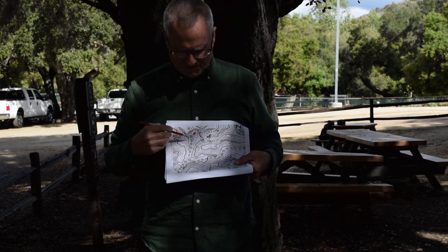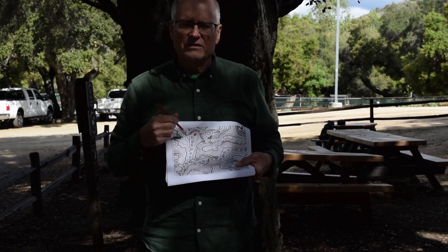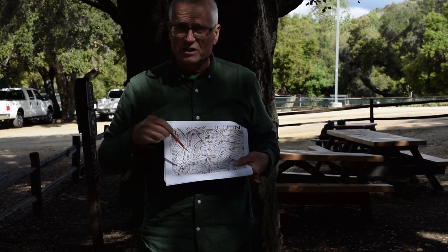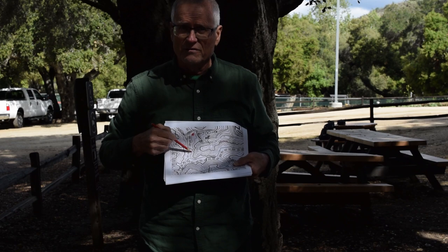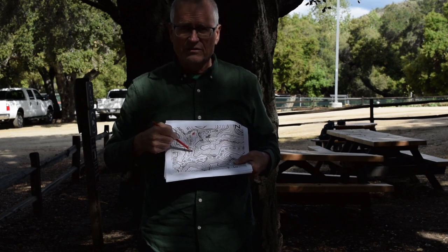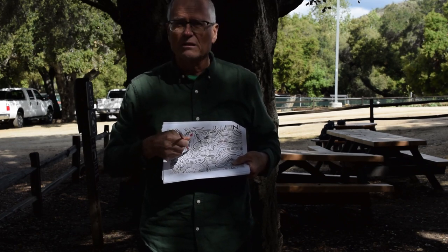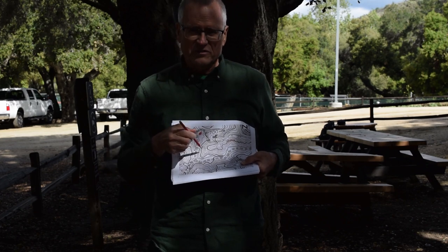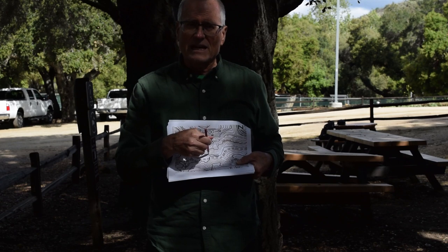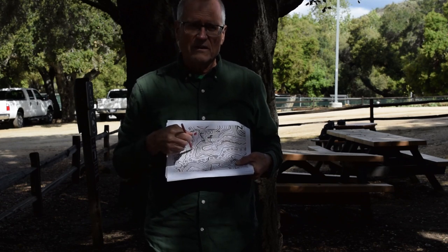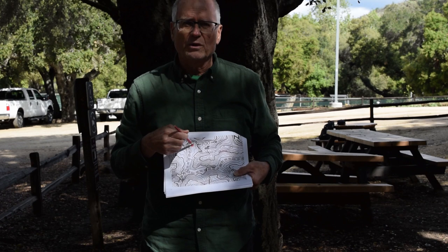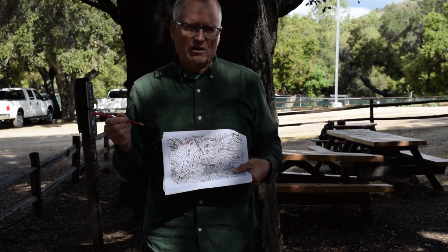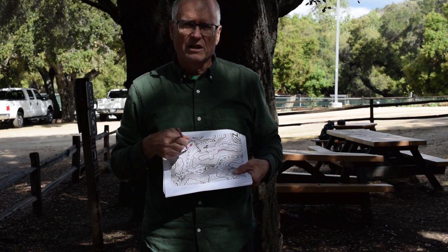That's our first point on the topographic map. We're going to travel south — down on this map — stopping along the way to locate several other points. You'll need to keep track of those on your practice topographic map. While we're walking, I'll also be pointing out some of the native plants along the way.